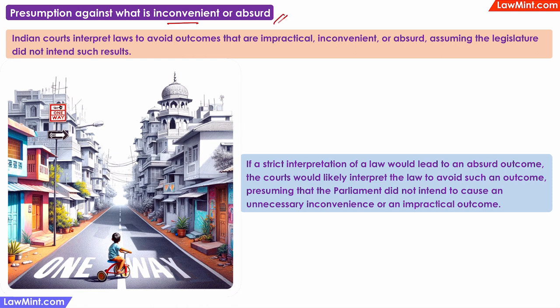Presumption against what is inconvenient or absurd. This is a presumption based on common sense that the legislature will not make laws to intentionally create inconvenient or absurd situations. For example, if there is a road marked 'one way for all vehicles,' a very strict literal interpretation might say that even kids on tricycles are not allowed on that road. But courts will work with the presumption that such absurd situations were not the legislature's intention, and therefore kids on tricycles might not be punished for violating the one-way rule.